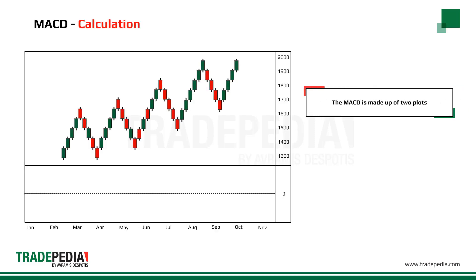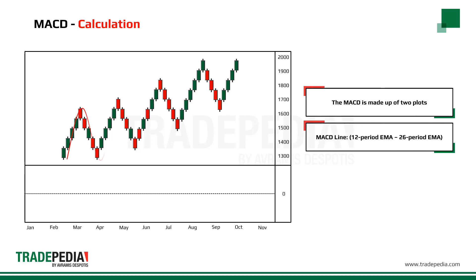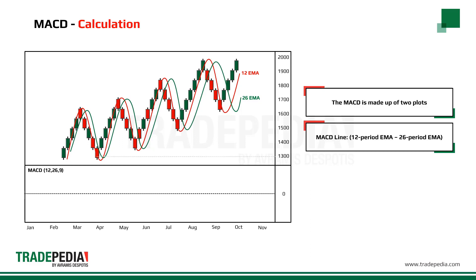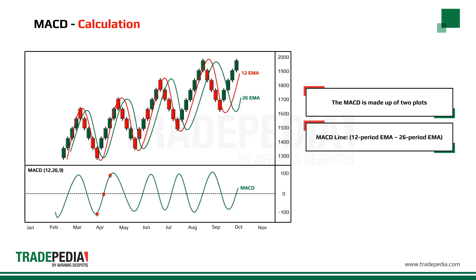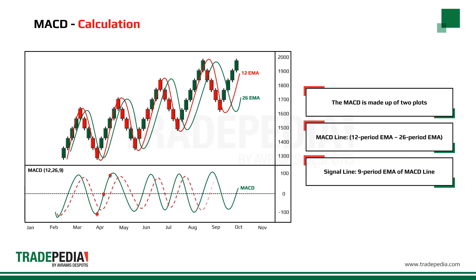The MACD is made up of two plots. The MACD line is the difference between the 12-period EMA and the 26-period EMA. When the 12-period EMA is below the 26-period EMA and the difference is 100, the MACD will be at negative 100. When the 12 is crossing above the 26 EMA, the MACD will be crossing the zero line from negative to positive territory. When the 12 is above the 26 and the difference is 100, the MACD will be at positive 100. The second plot is the signal line, which is a 9-period exponential moving average of the MACD line.